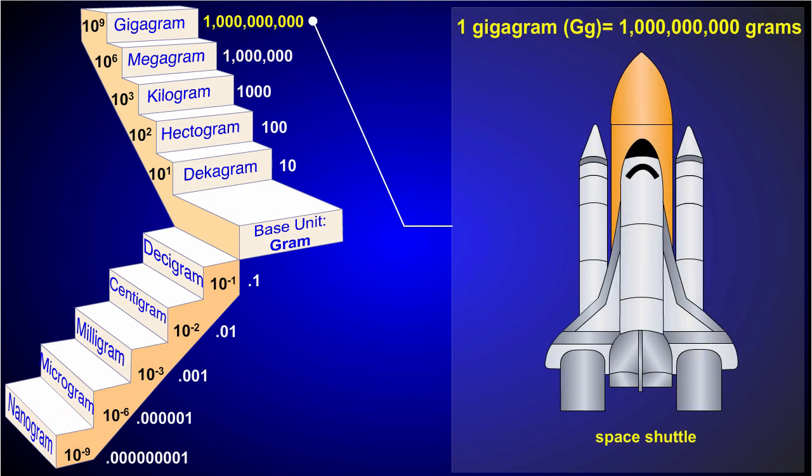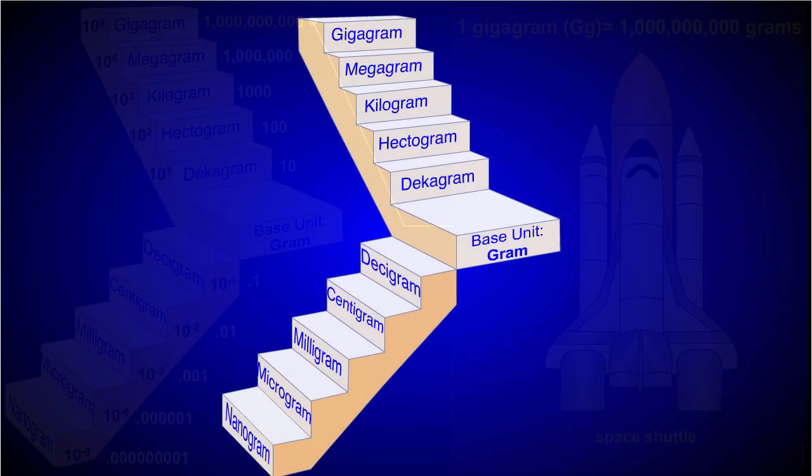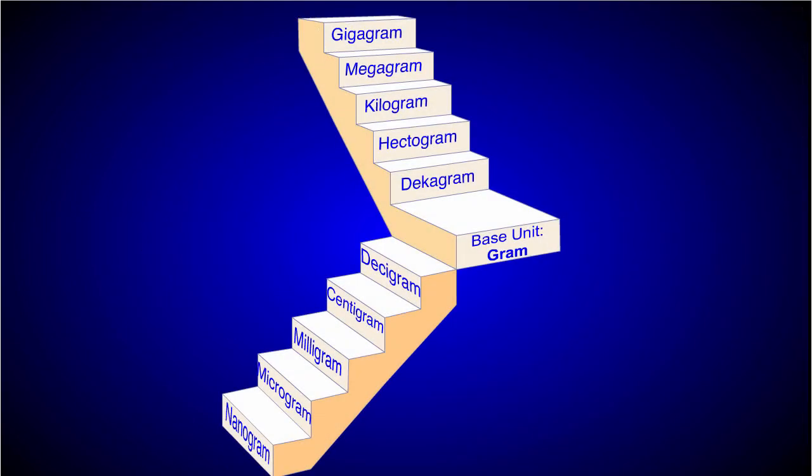A gigagram is equal to a billion grams. This is about the weight of 1000 elephants or half the launch weight of the space shuttle. While it makes sense to understand all these units of measurement,